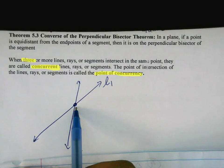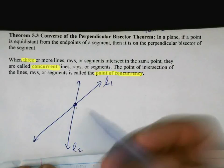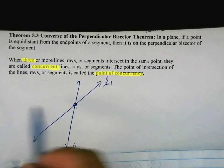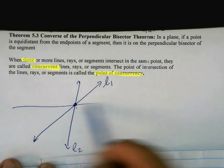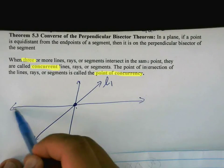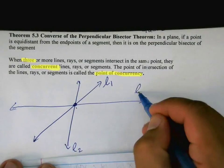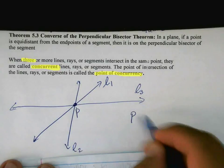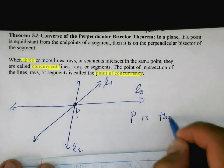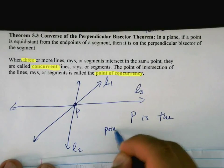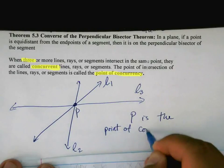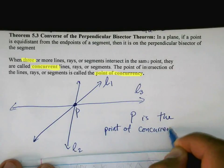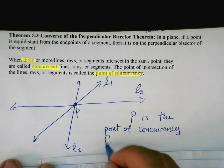Intersection can be two or three or four or five. But for it to be a concurrent point, there has to be at least three lines that go through this. So this is P. P is the point of concurrency for L1, L2, and L3.